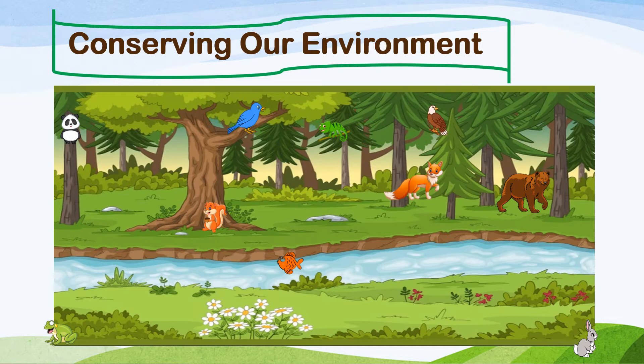Our Earth is a beautiful planet with a huge variety of animals and plants, but they became extinct. Why? Due to various human activities. That is why we have to know how to conserve our environment.